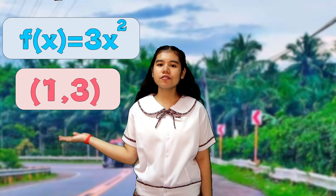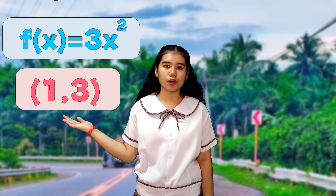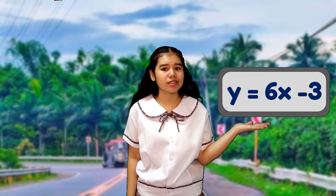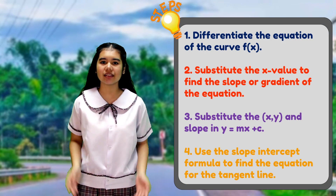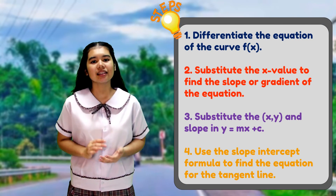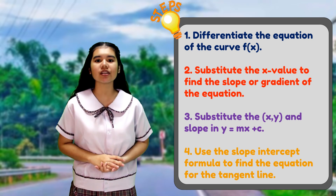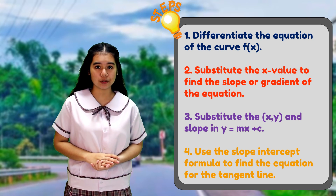And this is it! The equation of the line tangent to the curve f(x) = 3x² at point (1, 3) is y = 6x − 3. And that is how we find the equation of a line tangent to the curve. This is very useful as it can prevent accidents on the road.